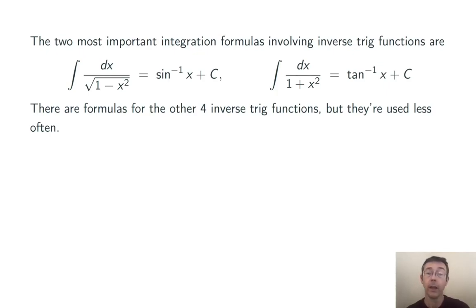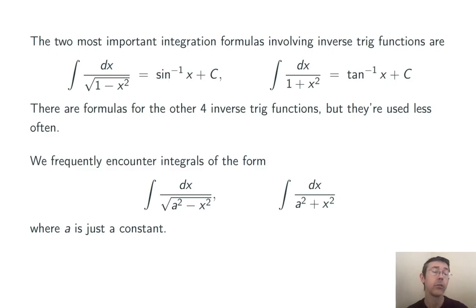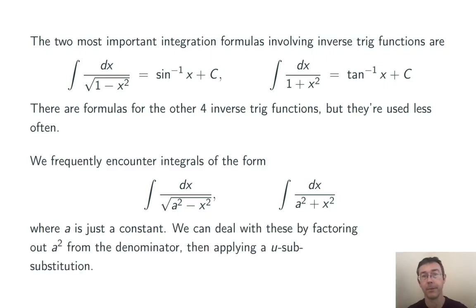There are integral formulas involving the other four inverse trig functions, but they're used less often and we usually just look them up if we need them. Frequently we run into very similar but not identical integrals — things of the form integral dx over the square root of a squared minus x squared, and integral of dx over a squared plus x squared, where a is just some positive constant. We can deal with these by factoring out the a squared from the denominator and then applying a u-substitution.